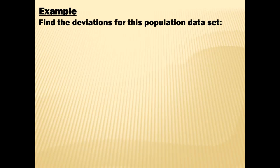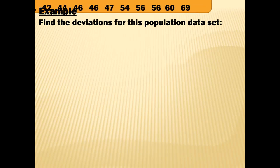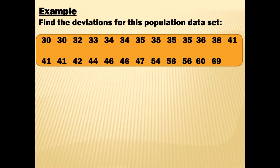Here's an example: find the deviations for this population data set. The data values are: 30, 30, 32, 33, 34, 34, 35, 35, 35, 36, 38, 41, 41, 41, 42, 44, 46, 46, 47, 54, 56, 56, 60, and 69.